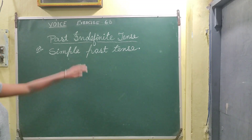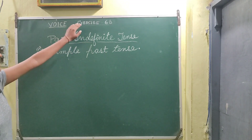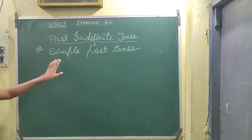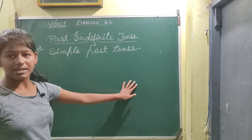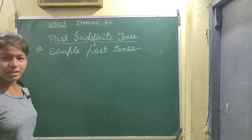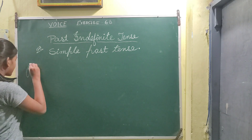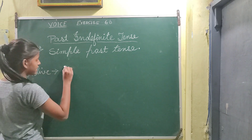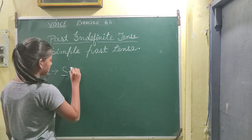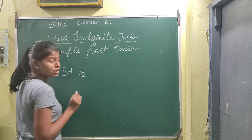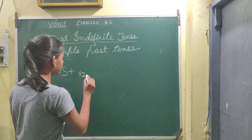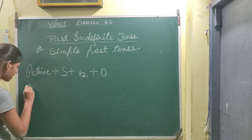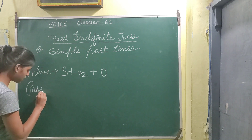Hello everyone. Today we are going to do voice exercise 66. There is past indefinite tense, which we also call simple past tense. First we will see what is active structure. Active structure is subject plus V2 — V2 is called verb second form — plus object.